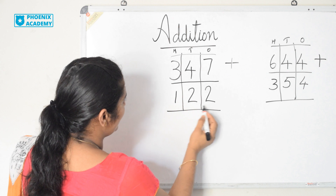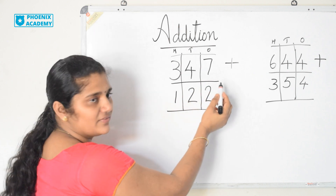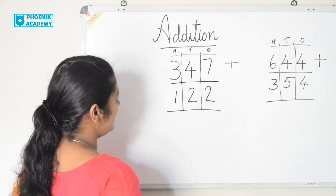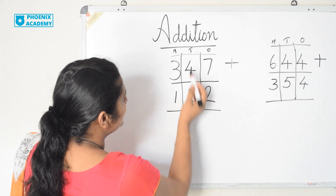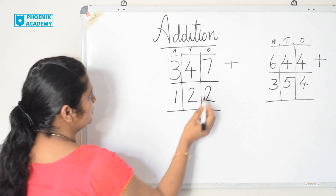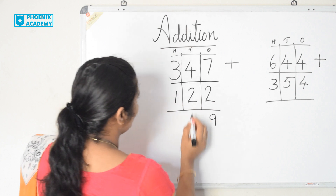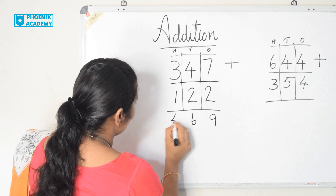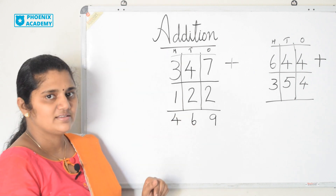347 plus 122. You know 347 is 7 ones, 4 tens and 3 hundreds. 122 is 2 ones, 2 tens and 1 hundred. Let's add now. 7 plus 2 is 9. 4 plus 2 is 6. 3 plus 1 is 4. So the answer is 469.